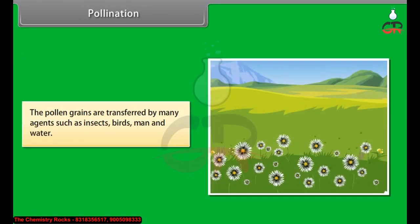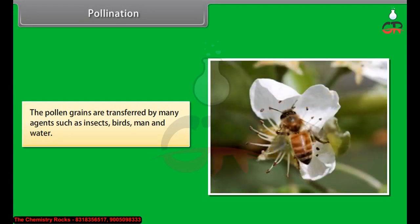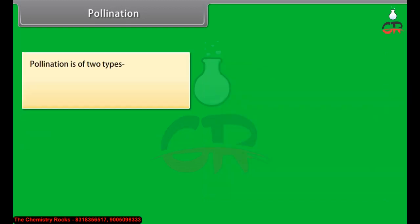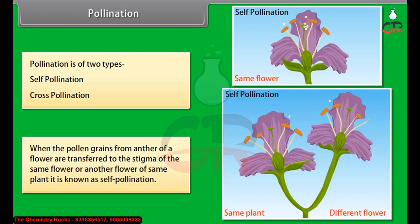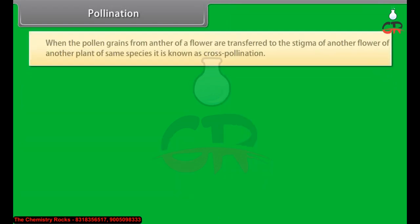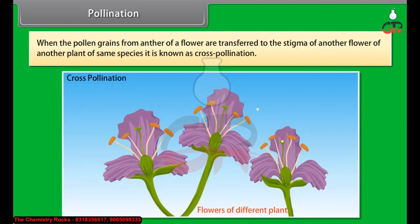Pollen grains are transferred by many agents such as insects, birds, man, and water. Pollination is of two types: self-pollination and cross-pollination. When pollen grains from the anther of a flower are transferred to the stigma of the same flower or another flower of the same plant, it is known as self-pollination. When pollen grains are transferred to the stigma of another flower of another plant of the same species, it is known as cross-pollination.